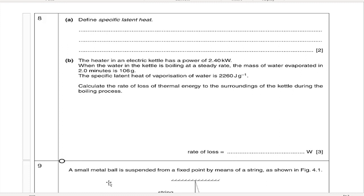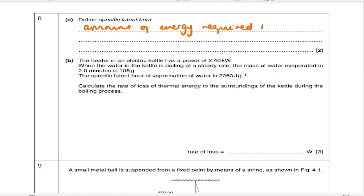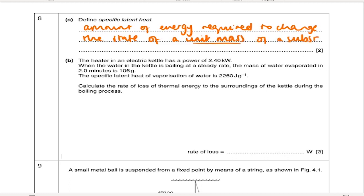Question 8: define specific latent heat. This is just a recall definition. It is the amount of energy required to change the state — not the temperature — of a unit mass of a substance, without a change in temperature. People often missed the unit mass, which caused them to lose marks.